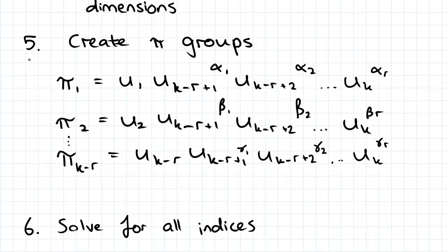We're going to pretty much copy this layout. For the term at the front of all the repeating variables, so the u1, u2, uk-r, we're just going to cycle through the function without the repeating variables.